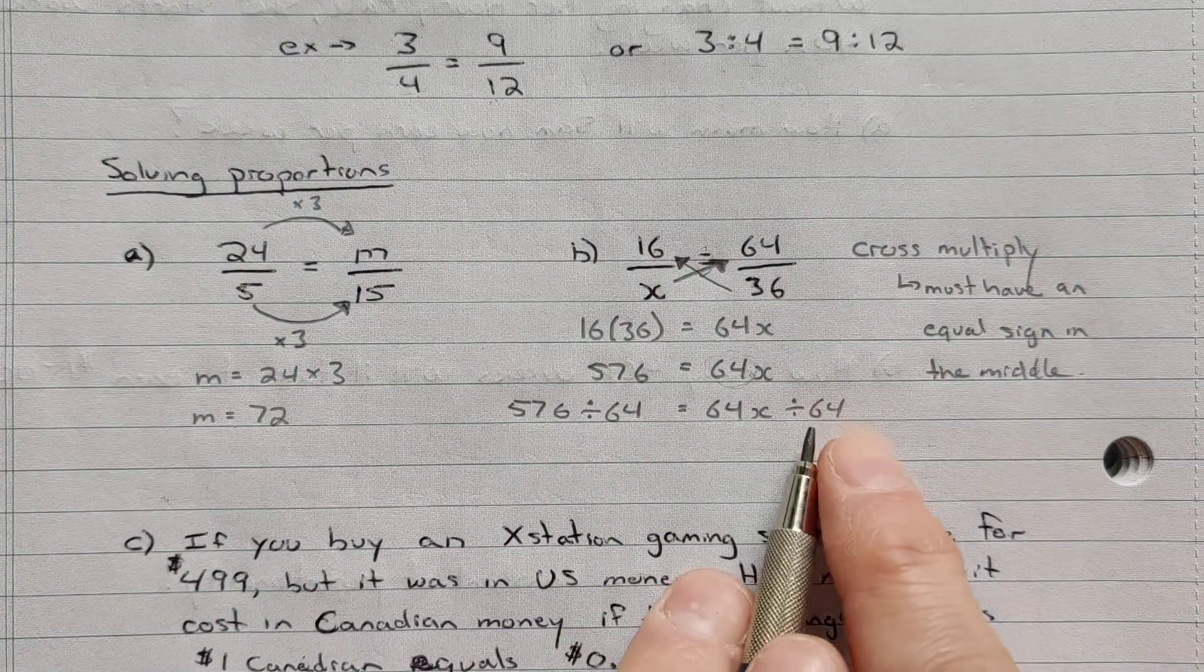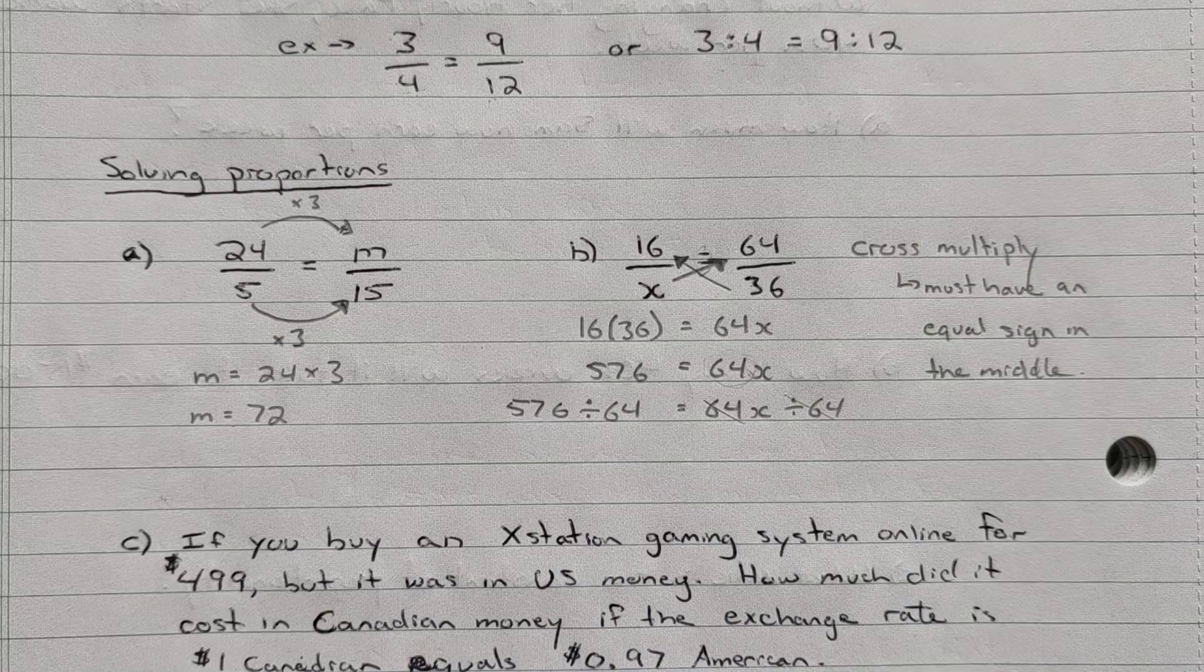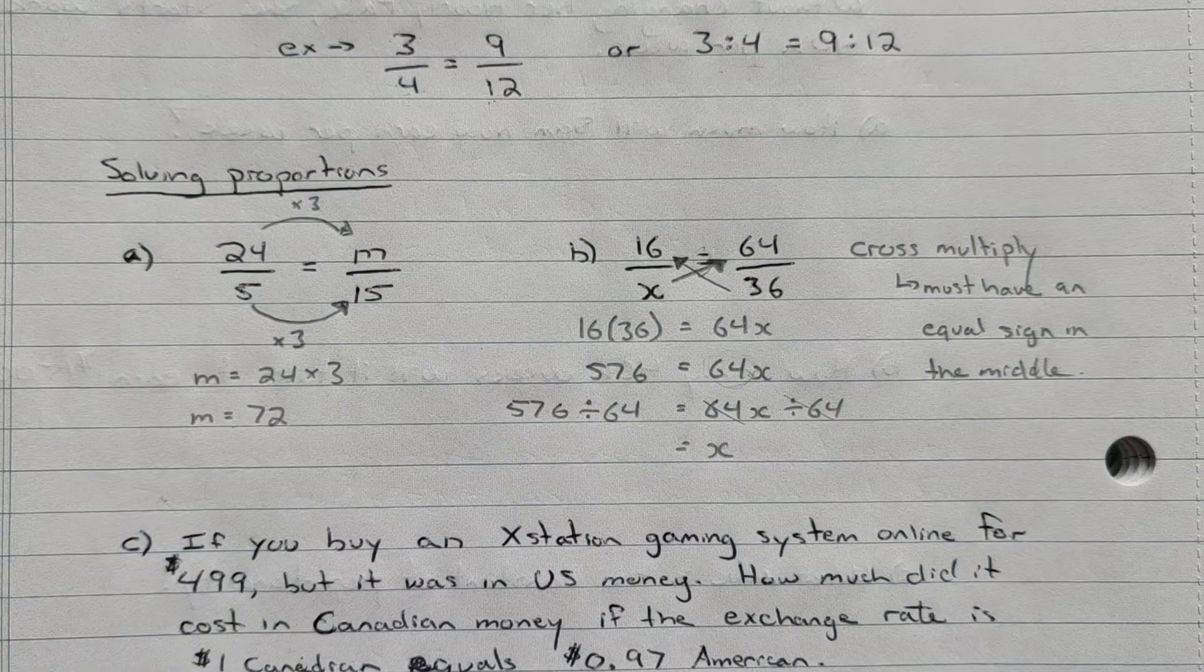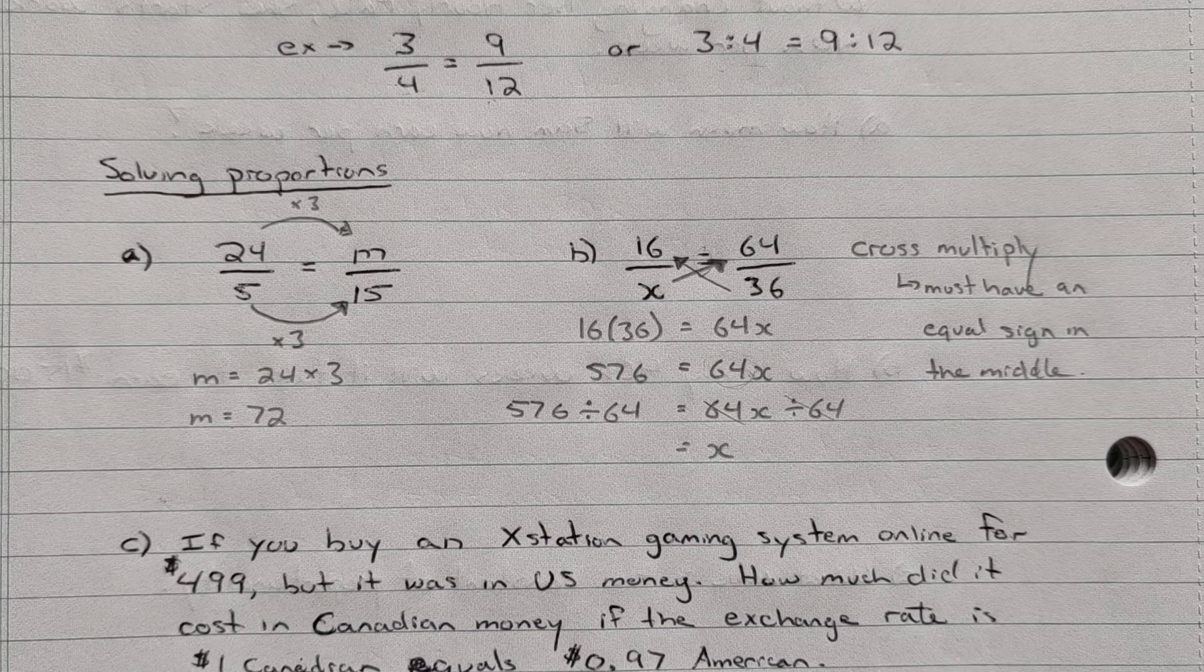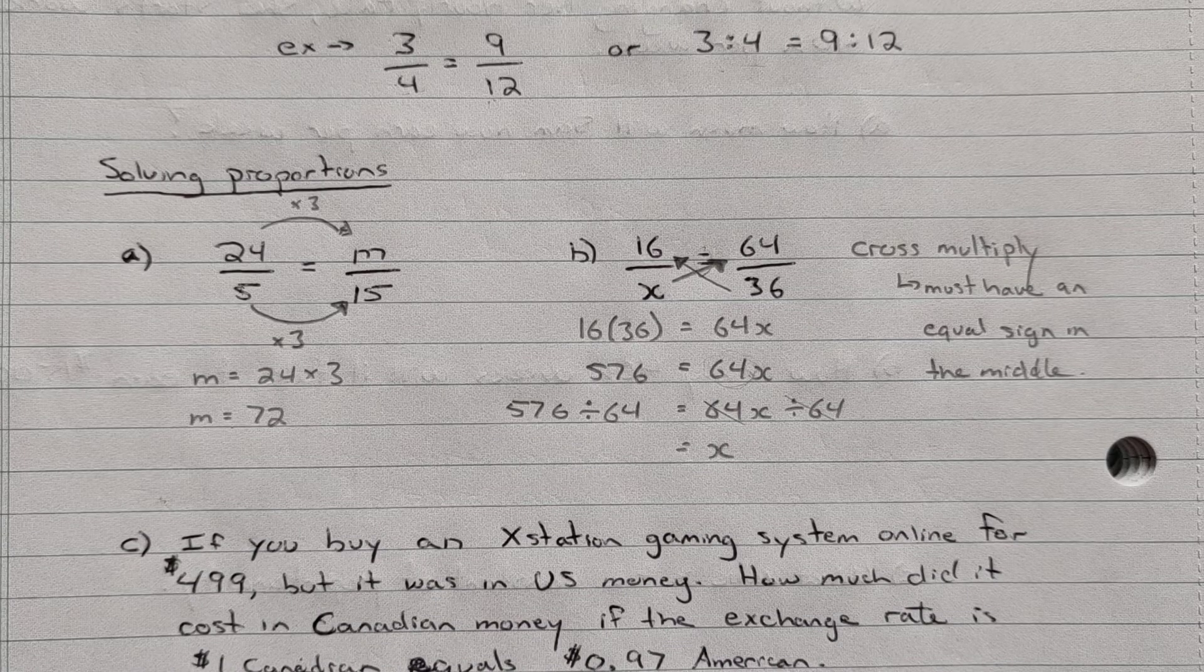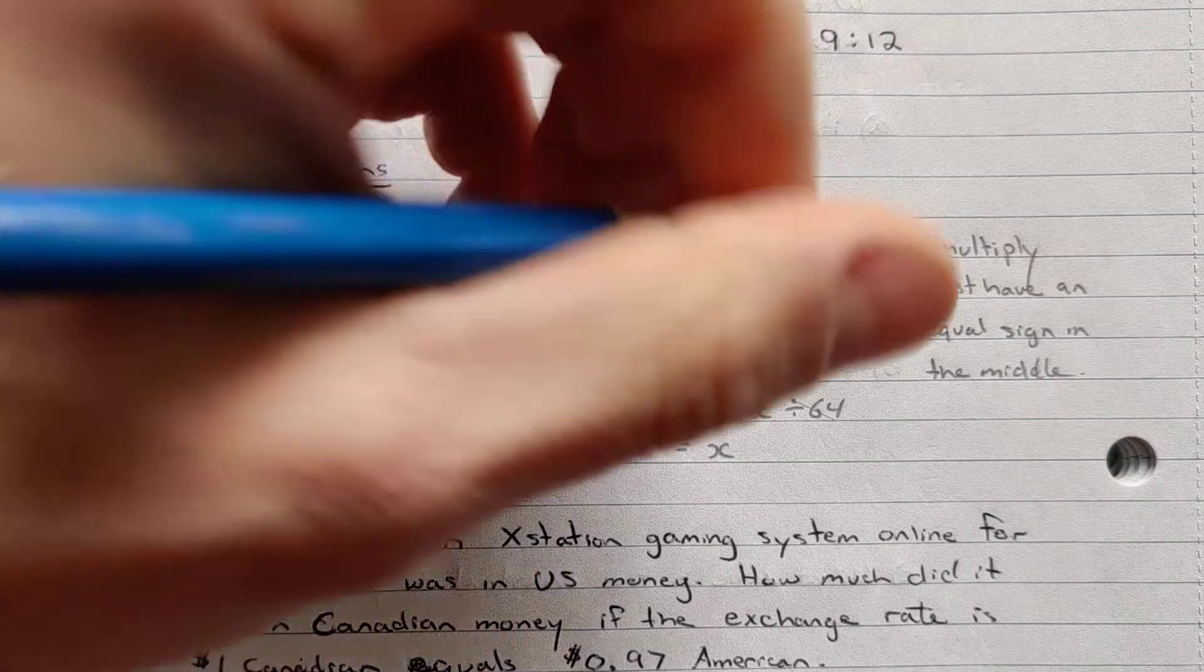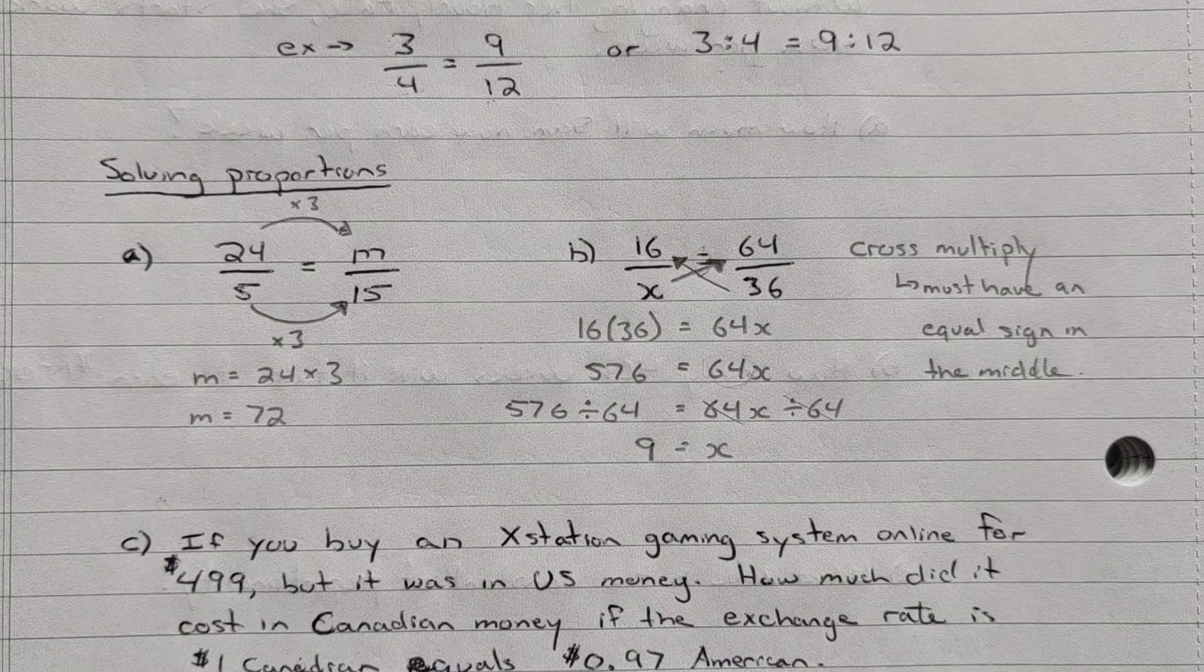Now thinking of how we solve Pythagorean theorem type questions we need to get rid of this times 64. So we have to do the opposite operation, and the opposite of multiplying by 64 is to divide both sides by 64. So if we have 576 divided by 64, that equals 64x divided by 64. Because we're multiplying and then dividing by 64, those portions will actually cancel each other out. We're just left with x on this side. And then 576 divided by 64 is going to give us 9. So our x value here is 9.